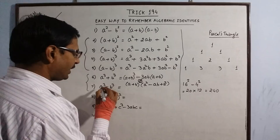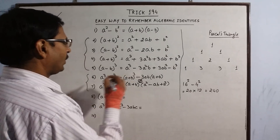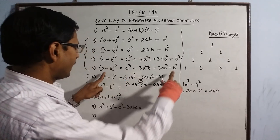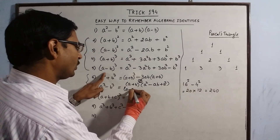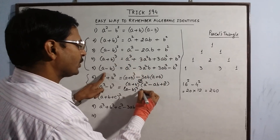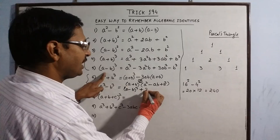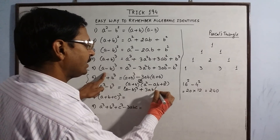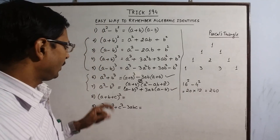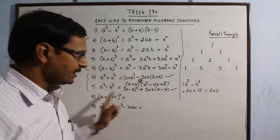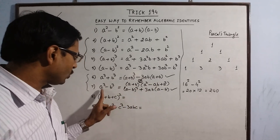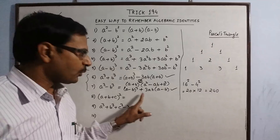Similarly, A cube minus B cube can be derived from identity number 5. We write A minus B whole cube, bring two terms to the LHS — they become positive — and 3AB is common with the sign A minus B. Comparing the two identities, every sign is exactly reversed: in A cube plus B cube you have positive, negative, positive, and in A cube minus B cube you have negative, positive, negative.